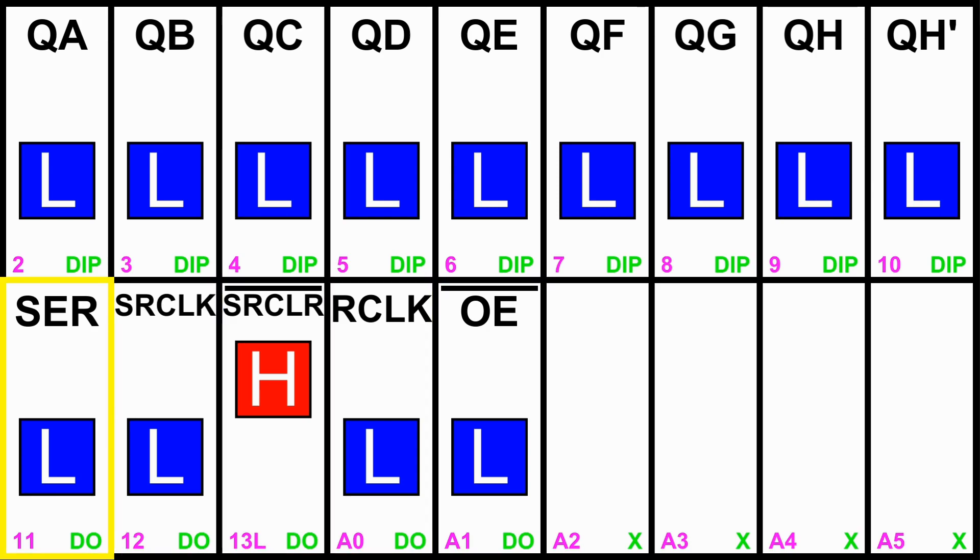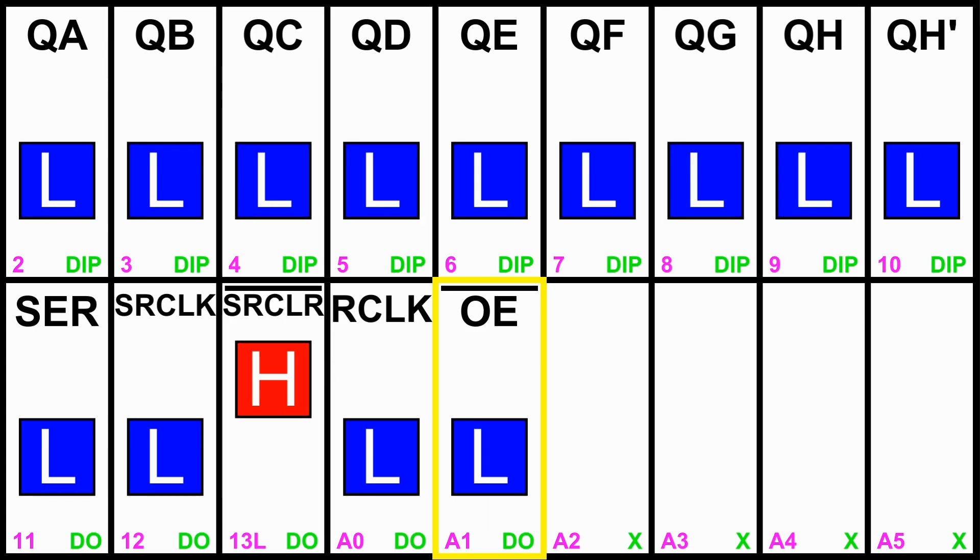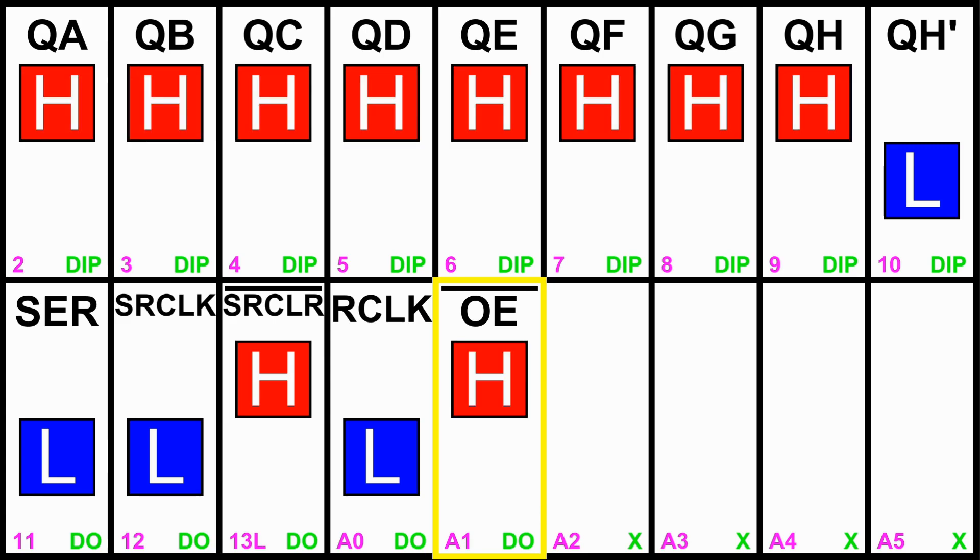So the first thing you'll notice, well, DIP means it's digital input with a pull-up resistor. And because I have pull-up resistors, when I put this to high impedance, you'll see that the output enable controls QA through QH, but not the QH apostrophe. That's the internal one. So output enable just controls those eight. And the QH apostrophe is used for chaining, so it still functions even when the output is not being updated.